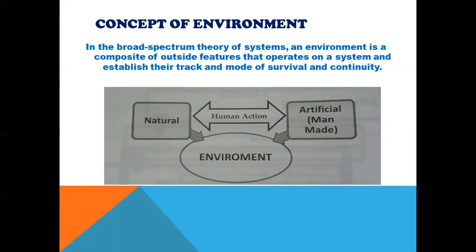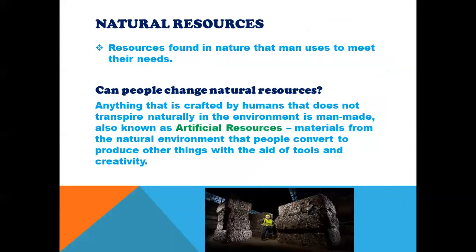The environment is composed of natural resources and artificial or man-made resources. Natural resources are converted into artificial or man-made resources through human action. Natural resources are resources found in nature that humans use to meet their needs. Can people change natural resources? Yes — anything created by humans that does not occur naturally in the environment is man-made, also known as artificial resources. These are materials from the natural environment that people convert to produce other things with the aid of tools and creativity.